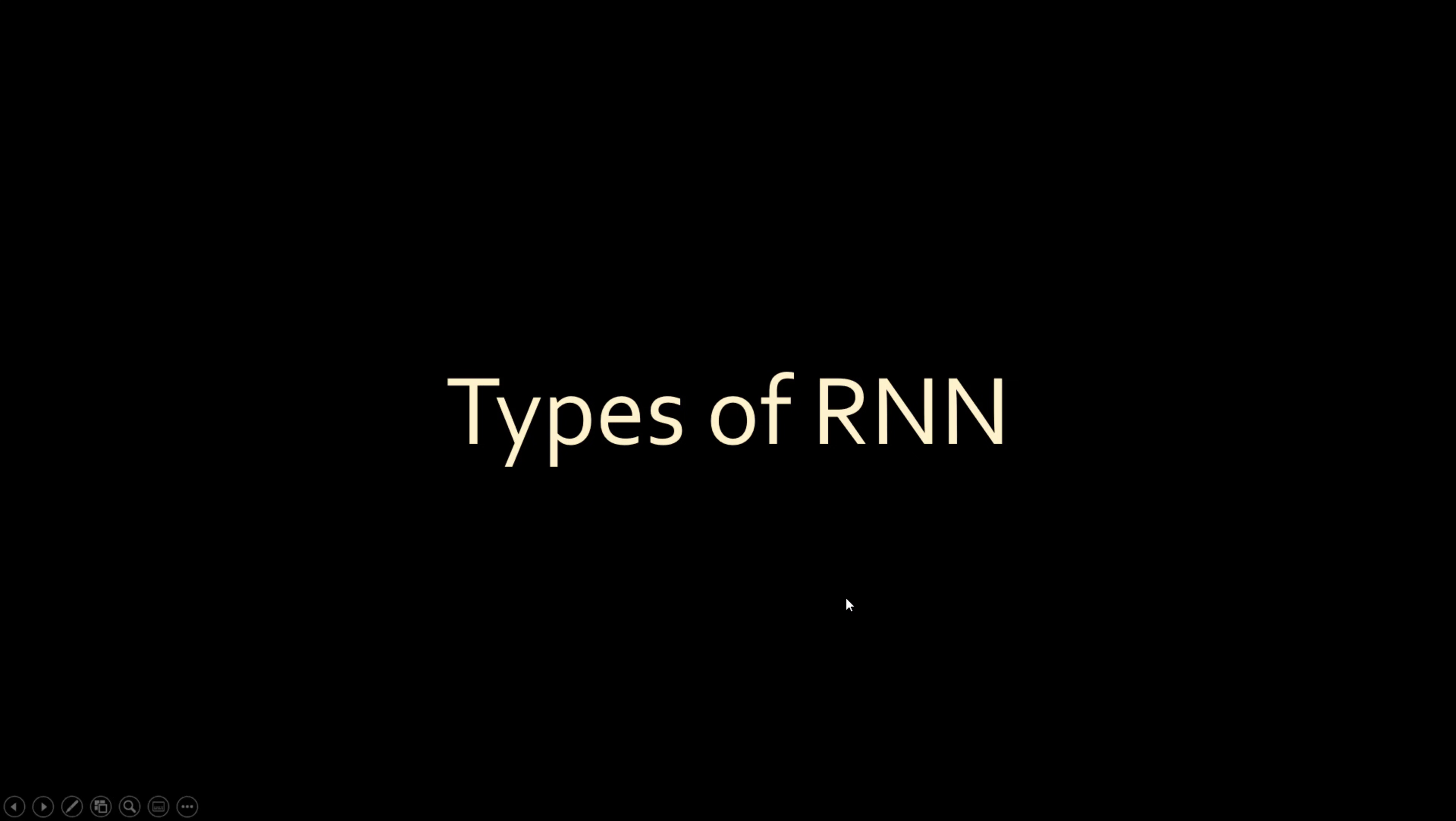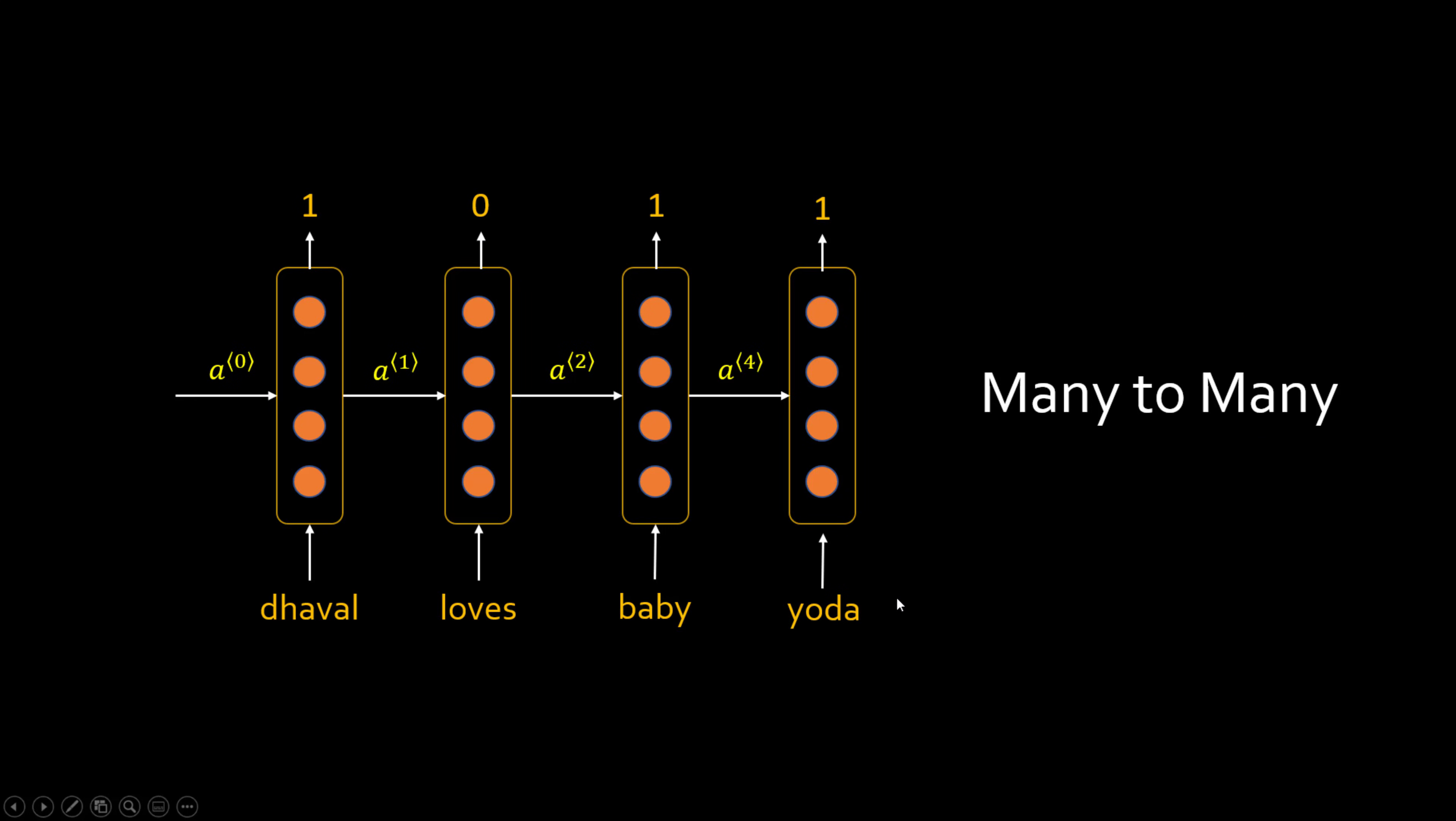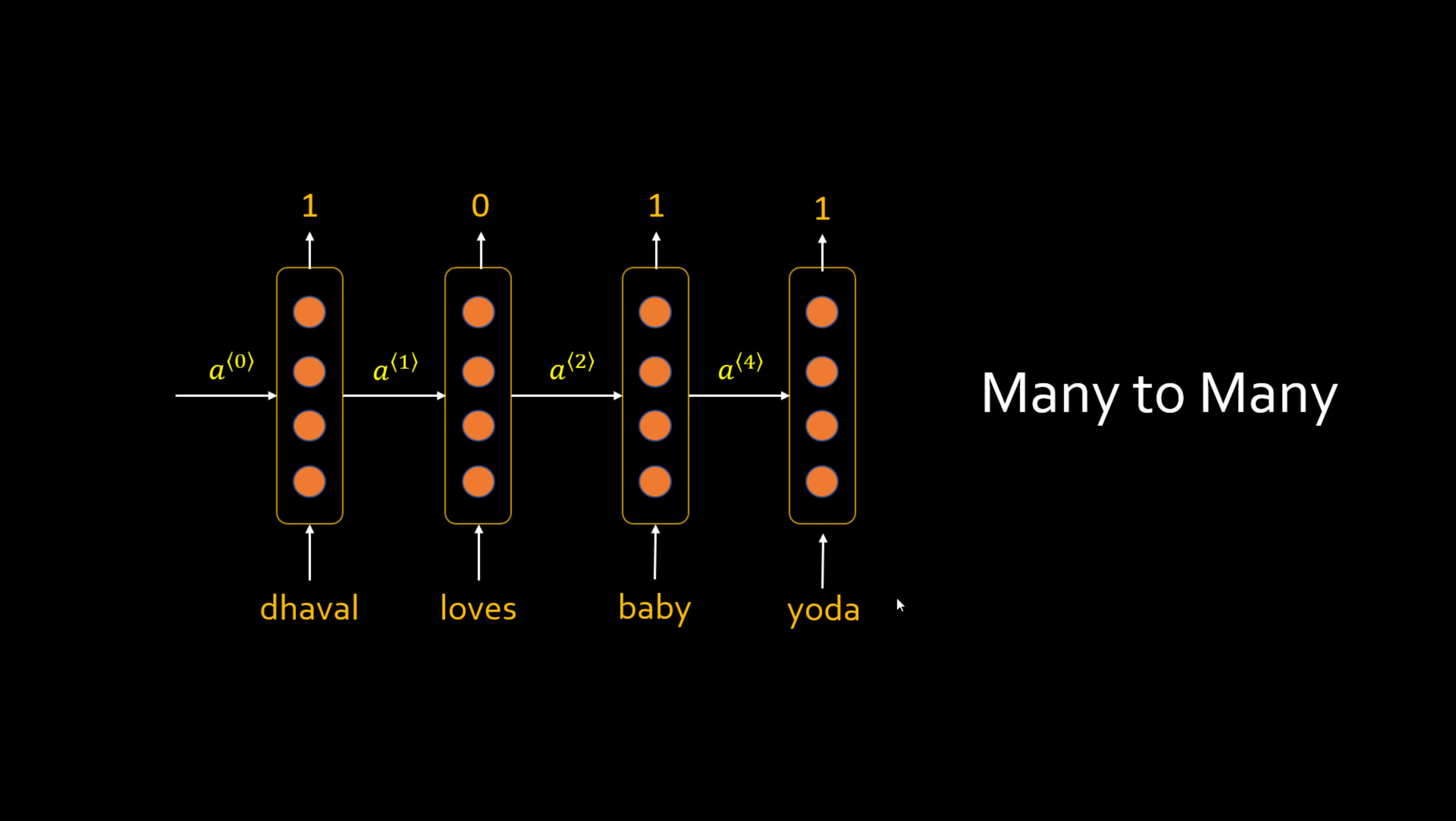In this short video we'll quickly cover different types of recurrent neural networks. In our last video we looked at the example of named entity recognition where, given a statement, you can tag each word whether it's a person or not. So in this case, for example, Dhaval, baby, and Yoda are persons, so there is one as an output.